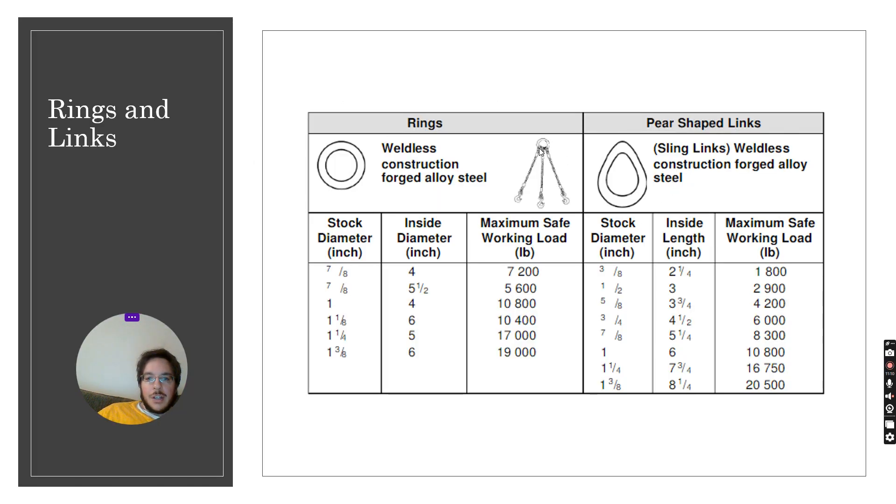Now remember earlier we were looking at rings and links for chains. We can look at rings which have no welds. They're made out of alloy steel in the factory and they come in different sizes with a standard stock diameter and then a standard inside diameter between 4 and 6 inches. They have a maximum working load of between 7,000 and 19,000 pounds. If you've got a load you figure out how many pounds you're lifting and then you come down to the column and then you go across to see the diameter. And we've also got pear-shaped links which come in many more sizes.